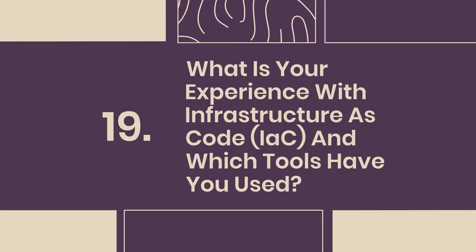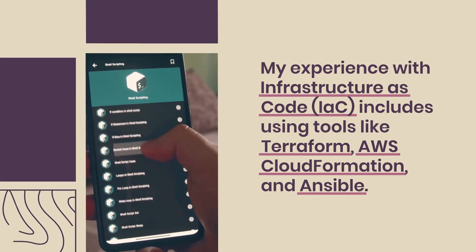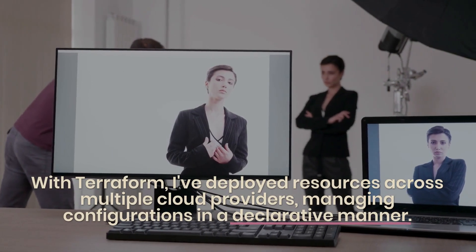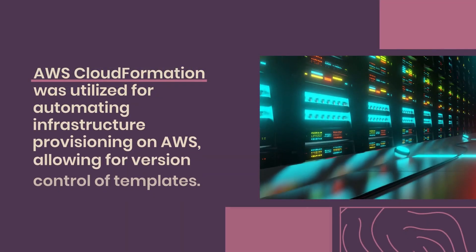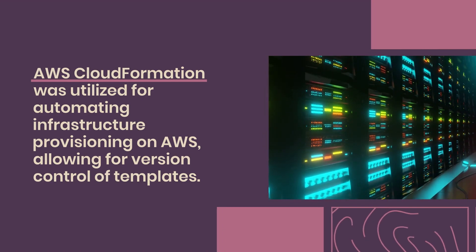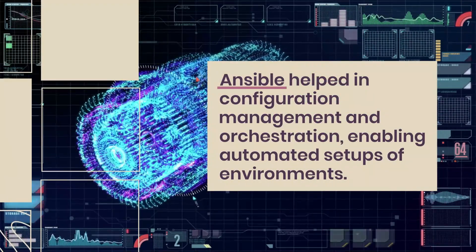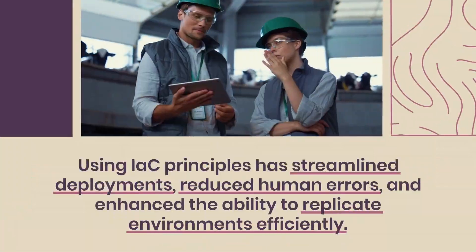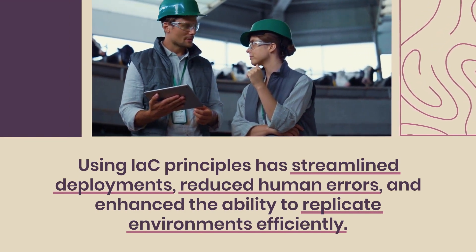19. What is your experience with Infrastructure as Code (IaC) and which tools have you used? My experience with IaC includes using tools like Terraform, AWS CloudFormation, and Ansible. With Terraform, I have deployed resources across multiple cloud providers, managing configurations in a declarative manner. AWS CloudFormation was utilized for automating infrastructure provisioning on AWS, allowing for version control of templates. Ansible helped in configuration management and orchestration, enabling automated environment setups. Using IaC principles has streamlined deployments, reduced human errors, and enhanced the ability to replicate environments efficiently.